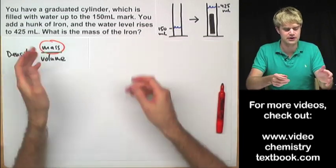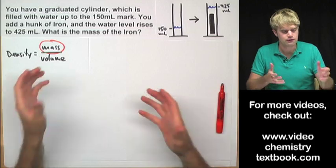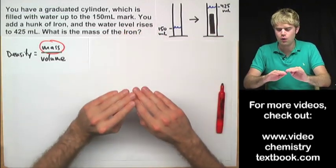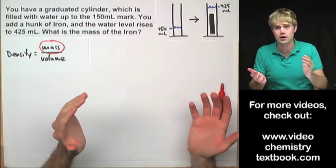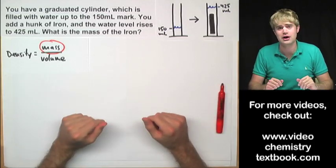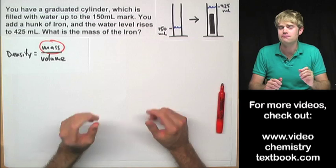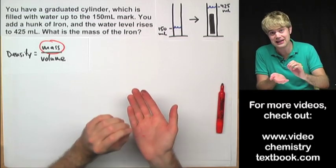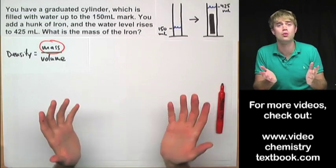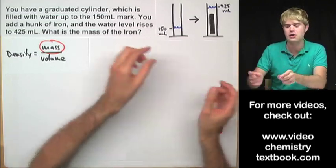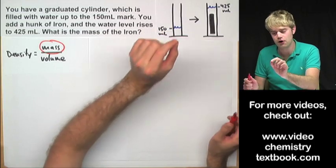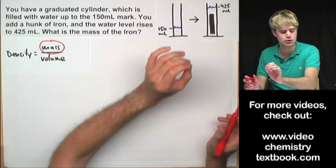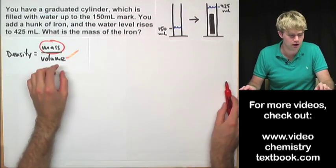We're not given a volume for this piece of iron. Instead we talk about what happens with the water when we add the iron to a graduated cylinder. You might remember that this is one of the ways that we can determine the volume of something by putting it into water and seeing how much the water rises. We have to do a little bit of math but that's how we're going to figure out the volume of the piece of iron by looking at how much the water in the graduated cylinder moved.